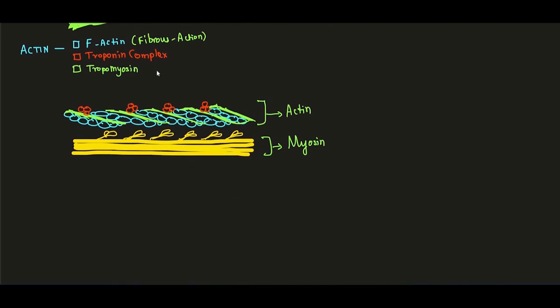Now let us look at the muscle fibers individually. The contractile proteins are actin and myosin. Actin is the light filament and myosin is the thick filament based on molecular weight. Myosin comprises approximately 55% and actin approximately 45% of the contractile protein content.